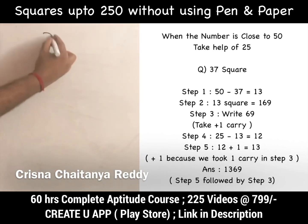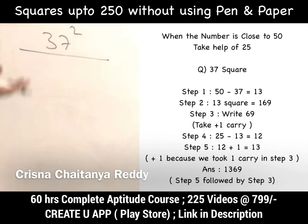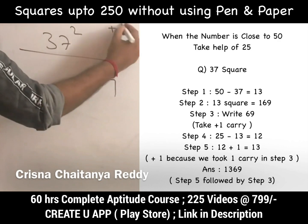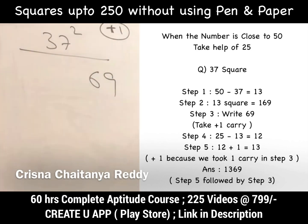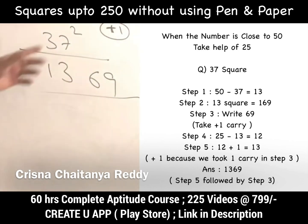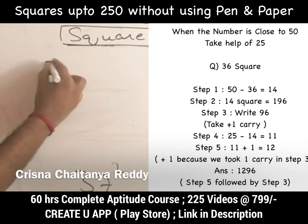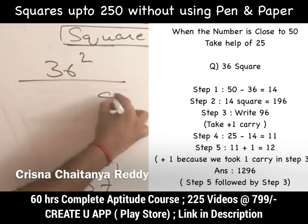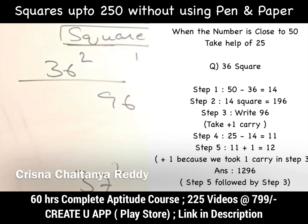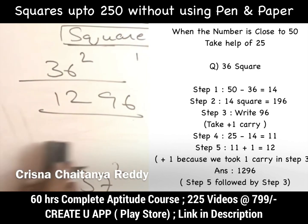Be careful with carry signs. For 37²: it is 13 less than 50. 13² = 169; write 69 and carry is +1 (not −1, because minus 13 squared is also +169). It is 13 less than 50, so subtract from 25: 25 − 13 = 12, plus 1 carry = 13. Answer is 1369. For 36²: 14 less than 50. 14² = 196; write 96, carry +1. 25 − 14 = 11, plus 1 = 12. Answer is 1296.